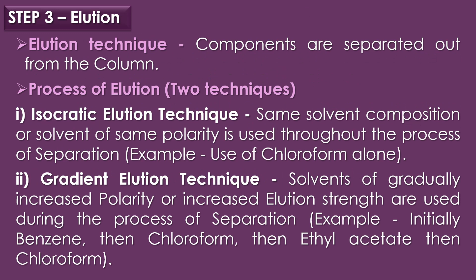The third step is elution. By the elution technique, the individual components are separated out from the column. There are two elution techniques: isocratic elution, where the same solvent composition or solvent of the same polarity is used throughout — for example, use of chloroform alone; and gradient elution, where solvents of gradually increased polarity or increased elution strength are used — for example, initially benzene, then chloroform, then ethyl acetate, then methanol.